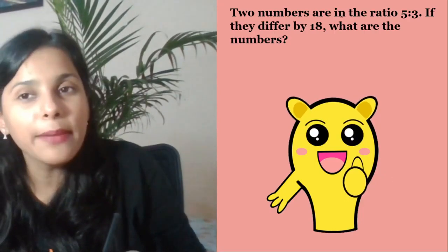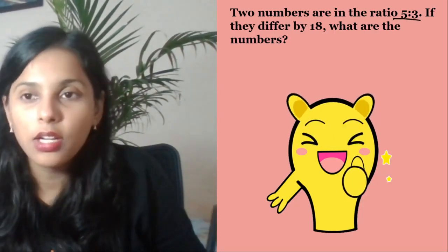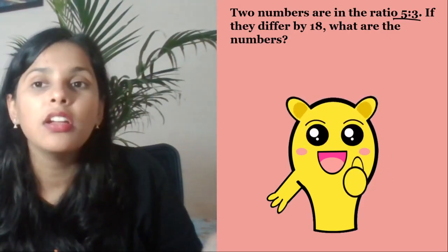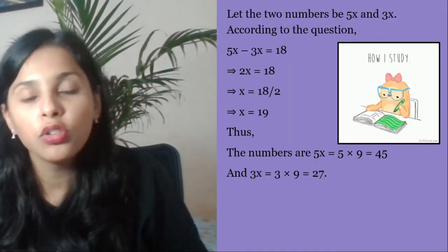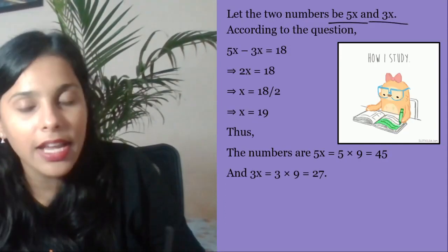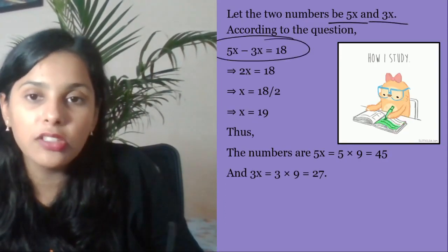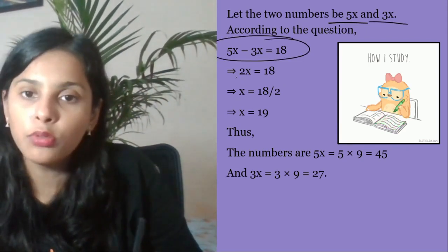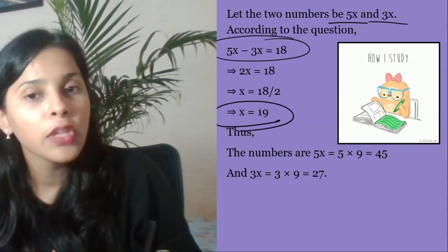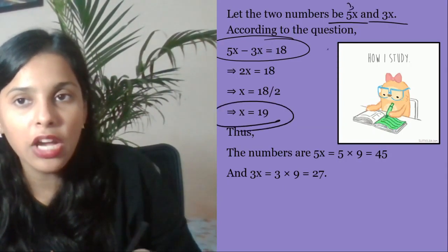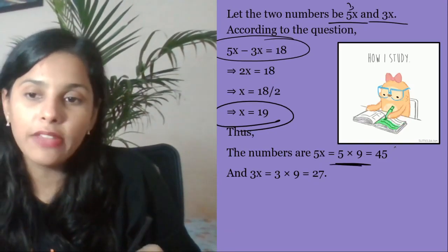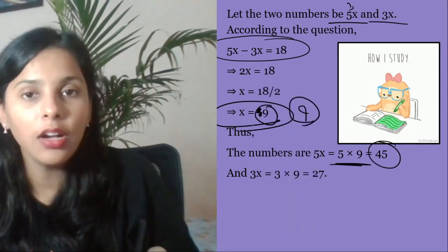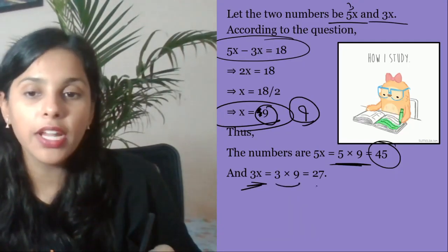Next question. Two numbers are in the ratio of 5 is to 3. If they differ by 18, what are the numbers? Their difference is 18, so you need to find the numbers. So one number is 5x, the other is 3x. According to the question, if I subtract 5x minus 3x, I get 18 as the answer. So 5x minus 3x equals 2x. X will be equal to 18 by 2, which is 9. So if x is 9, then 5x is 5 times 9, which is 45. And 3x is 3 times 9, that is 27.